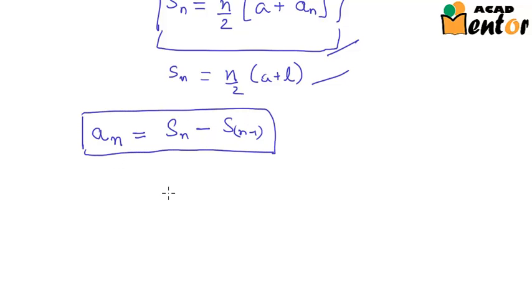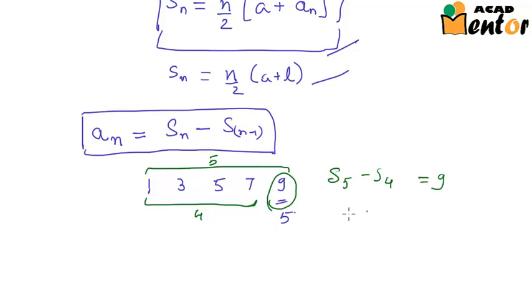Now what this basically means is, say your AP was 1, 3, 5, 7 and 9, and 9 is the Nth term or the 5th term. If you know the sum up to 5 terms and you also know the sum up to 4 terms, the sum of 5 terms minus sum of 4 terms would give you nothing but 9. This can be used in certain situations.